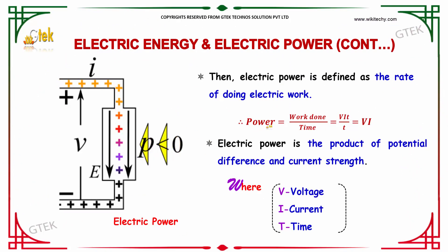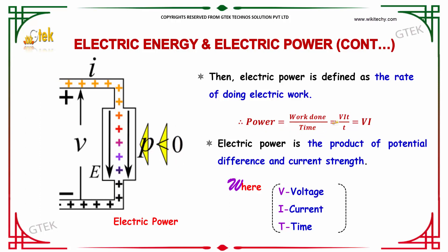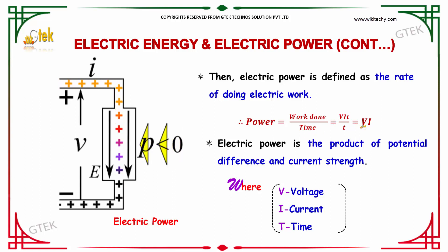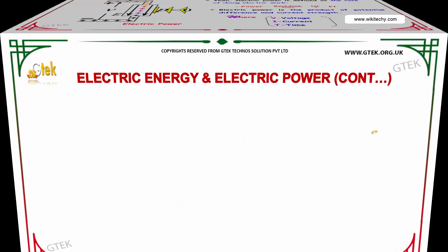Electric power is defined as the rate of doing electrical work. So, V times I times t divided by t equals V times I. Electric power is the product of potential difference and current strength.